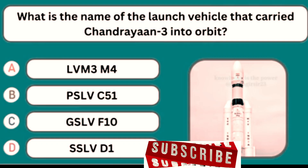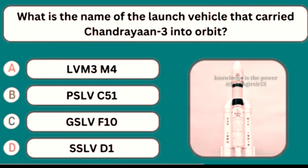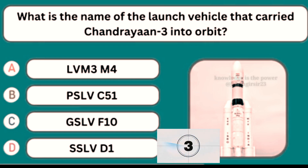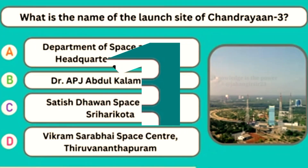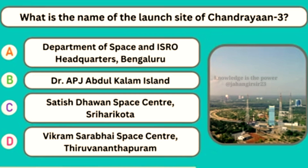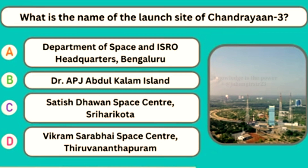What is the name of the launch vehicle that carried Chandrayaan-3 into orbit? Option A — LVM3M4. What is the name of the launch site of Chandrayaan-3? Option C — Satish Dhawan Space Center.